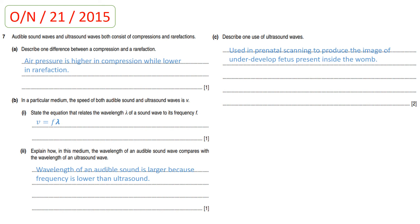Part B2: explain how the wavelength of an audible sound wave compares with that of an ultrasound wave in the same medium. The frequency of audible sound is lower than that of ultrasound. Since frequency is inversely proportional to wavelength, the wavelength of audible sound is larger than the wavelength of ultrasound. Part C: describe one use of ultrasound. Ultrasound waves are used in prenatal scanning, where they produce an image of an underdeveloped fetus inside the womb of a woman.